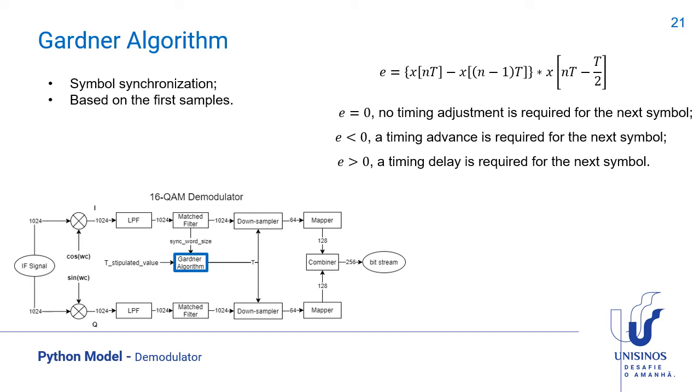This is the equation that was used to implement the algorithm. When it results in zero, there is no need to adjust the timing. When less than zero, a timing advance is required. When bigger than zero, a timing delay is required for the next symbol. We do that by increasing or decreasing the variable t in this equation.